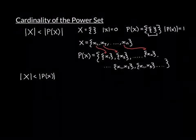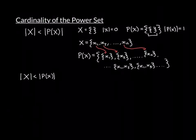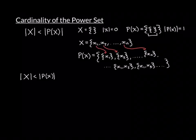So we now need to show that if X is an infinite set, either countable or uncountable, that the cardinality of its power set is still going to be provably greater than its own cardinality. To do this, let's just remind ourselves a little bit about how you show that two sets in infinite set theory have the same cardinality.